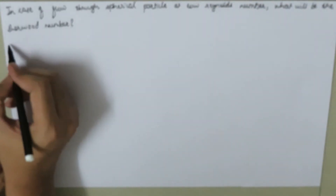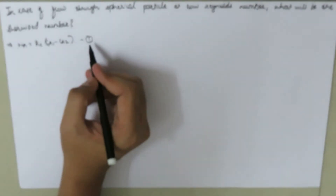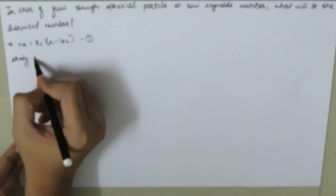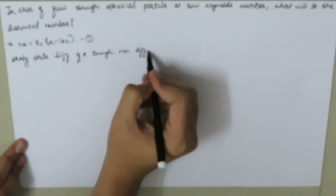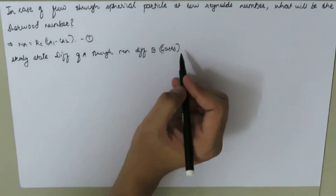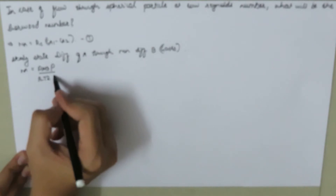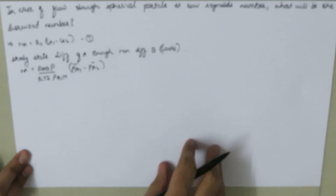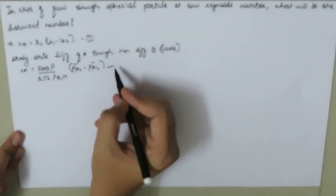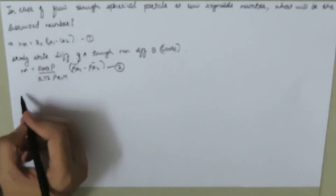In this case we know that molar flux can be written as the mass transfer coefficient Kc times (CA1 minus CA2) — let's call this equation number one. For the steady-state diffusion of A through non-diffusing B in the case of gases, we can write the molar flux NA as equal to DAB·P over RTZ·PBM, where PBM is the logarithmic mean partial pressure difference, and this equals (PA1 bar minus PA2 bar). If you don't know this equation, watch my previous videos where I derived steady-state diffusion of A through non-diffusing B in gases.